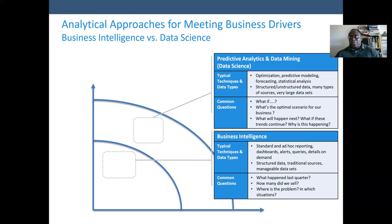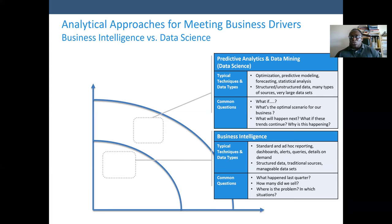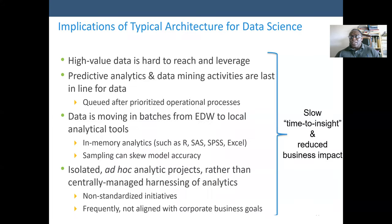For business intelligence, typical techniques include standard and ad-hoc reporting, using dashboards, alerts, queries, and drilldowns. It is less technical compared to data science. BI uses structured data most of the time, from traditional sources and manageable datasets. Data science uses big data, where most of the data is even unstructured. Common BI questions are: what happened last quarter, how many did we sell, where is the problem? BI is more based on generating reports on past activity, while data science tries to find answers and deals with very large, unstructured datasets.